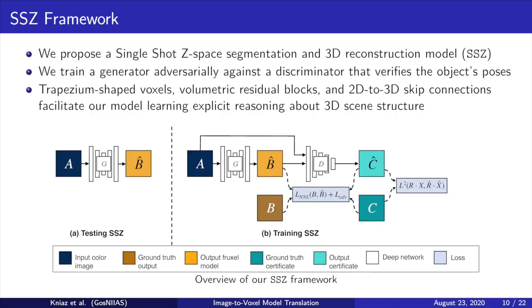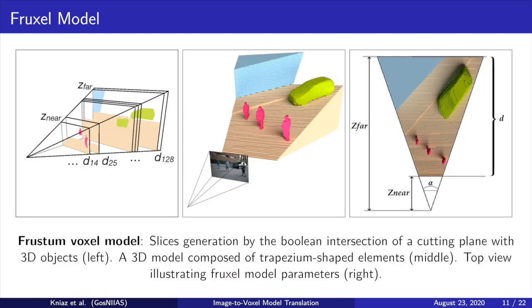We propose a single-shot Z-space segmentation and 3D reconstruction framework that we term SSZ. We train a generator adversarially against a discriminator that verifies the object's poses. Trapezium-shaped voxels, volumetric residual blocks and 2D-to-3D connections facilitate our model learning explicit reasoning about 3D scene structure. We use frustum voxel models, or shortly fraxel models, to keep 2D object contours aligned with their 3D counterparts. Unlike the rectangular voxel model, the fraxel model leverages trapezium-shaped voxels. The trapezium of each fraxel lies on the ray that connects a pixel on the sensor matrix and the deployed object.